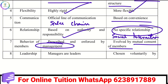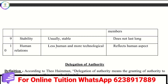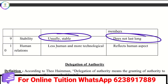In formal organization, the leaders are managers, but in informal organization, leaders emerge from among the members. Formal organization is usually stable, while informal is not. Formal organization is important for structure, while informal organization is important for relationships.